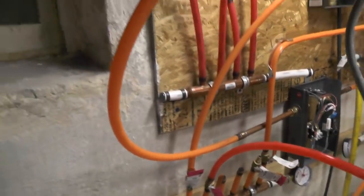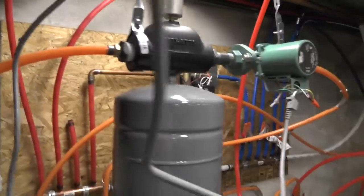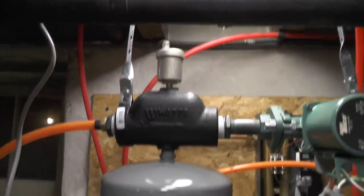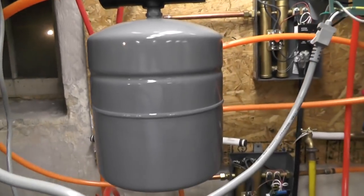So then when the hot water comes out of the heater that loops up here, comes into my air separator with the automatic air purge valve up top and a 15 psi pressure tank below.